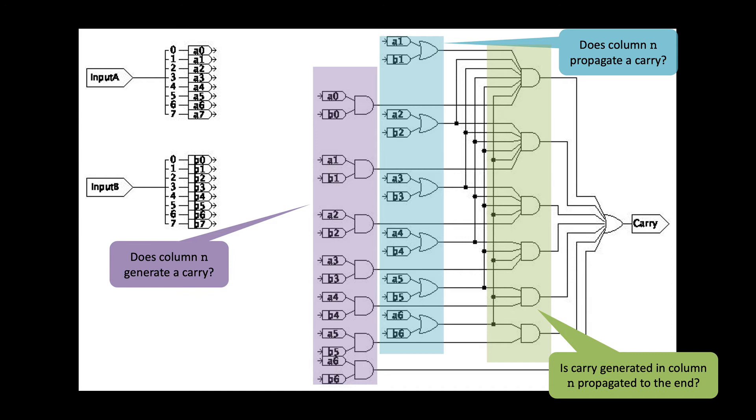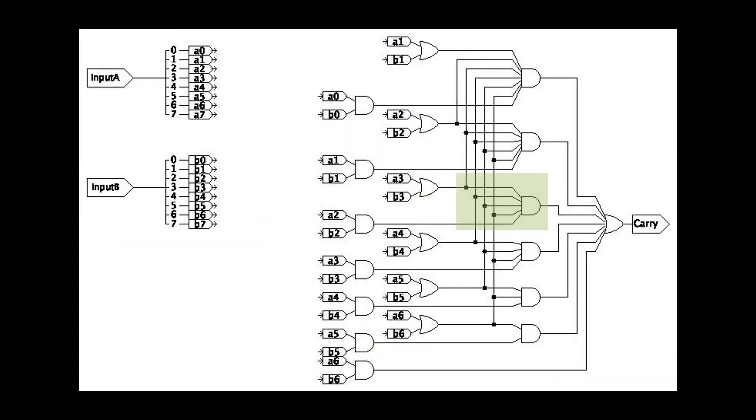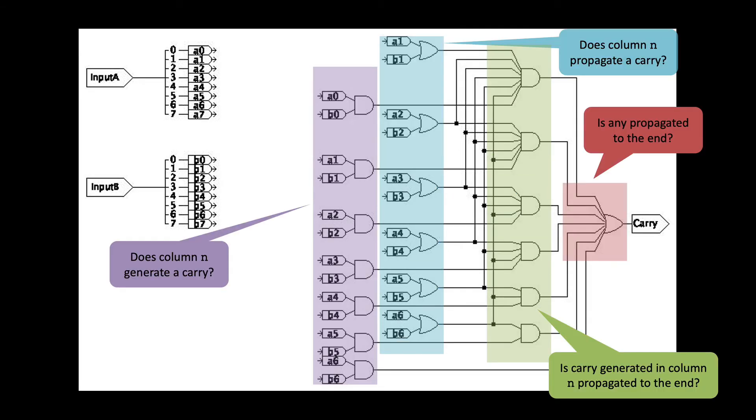The key part of this algorithm is done by these AND gates here. These gates determine whether a generated carry is propagated all the way to the left. For example, let's focus on this specific AND gate. It returns TRUE if column 2 generates a carry, and then columns 3, 4, 5, and 6 all propagate it. And then the OR gate at the end tells us if any of the generated carries are propagated all the way to the end, thereby creating a carry into the particular column.